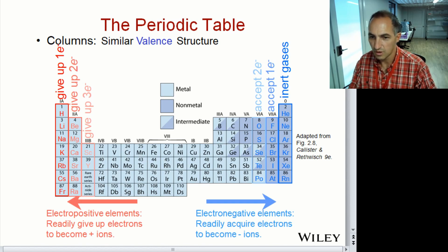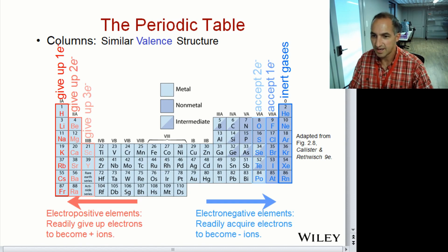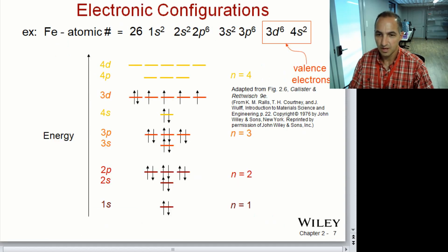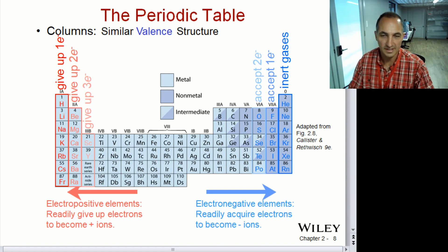Going to the right, you have higher electronegativity — more electronegative elements which readily acquire electrons and become negative ions. On the left side of the periodic table they are more electropositive and readily give up electrons to become positive ions.